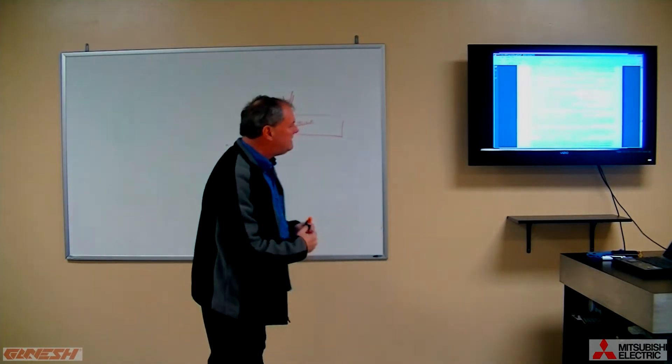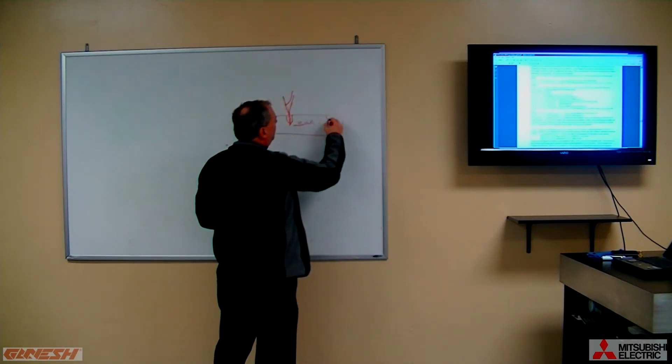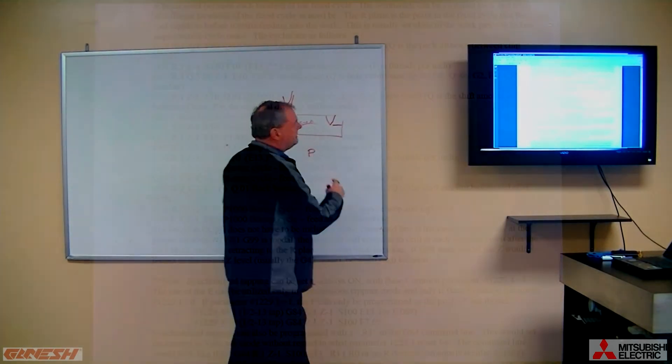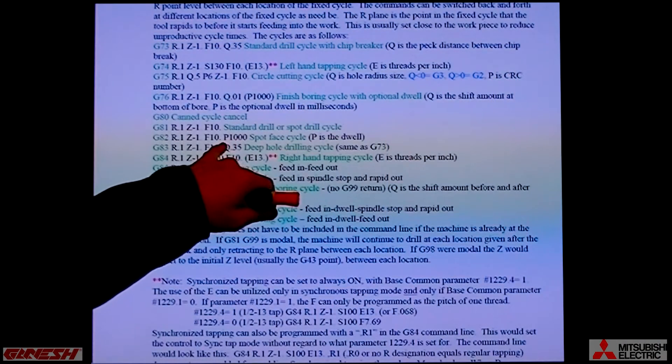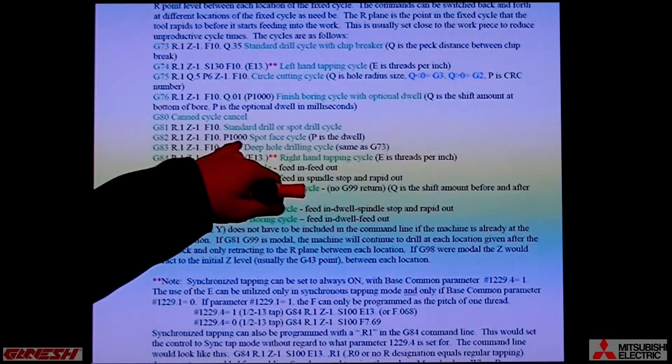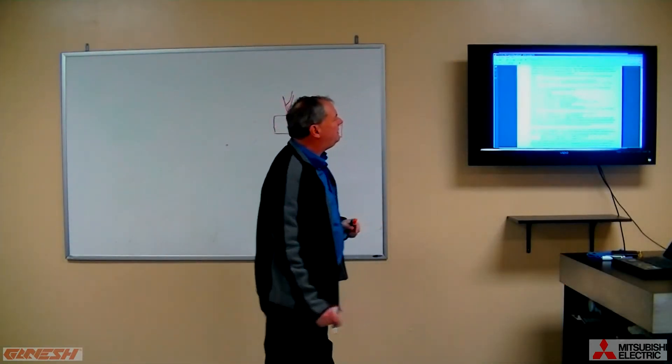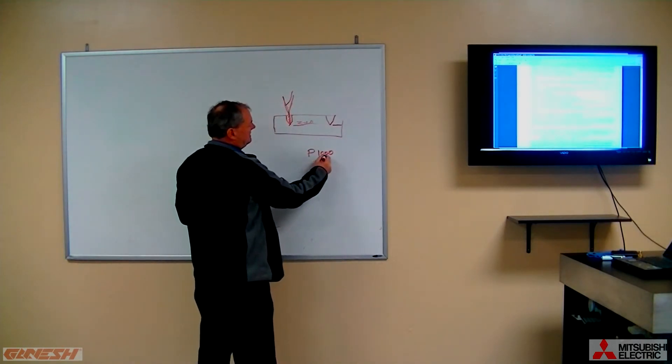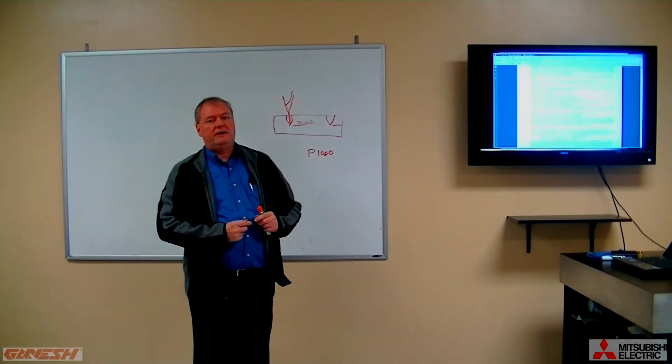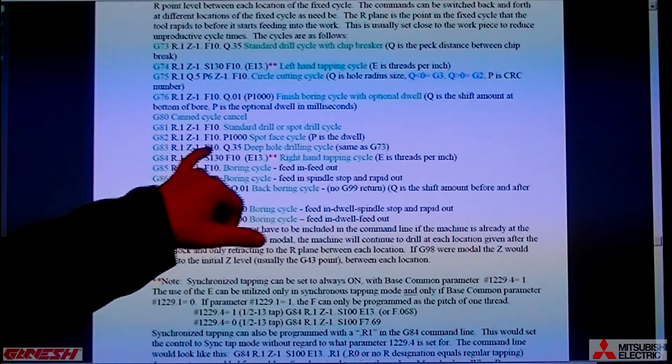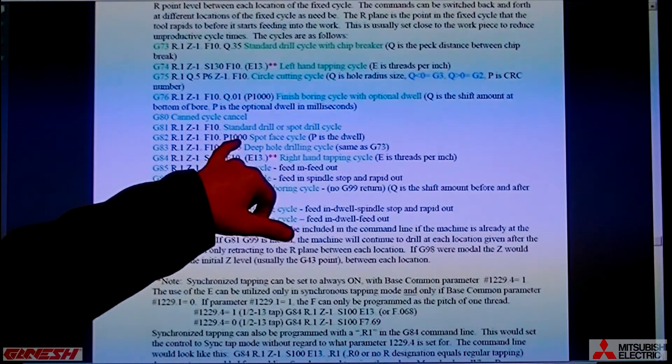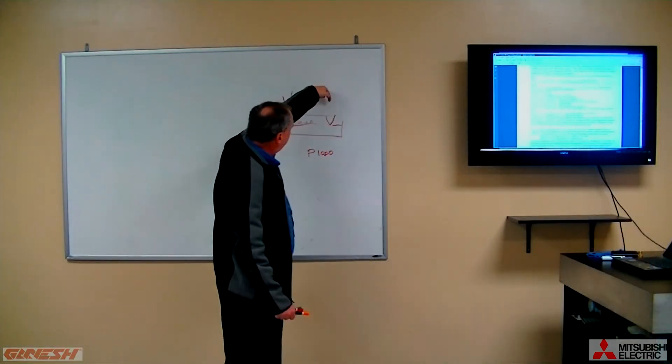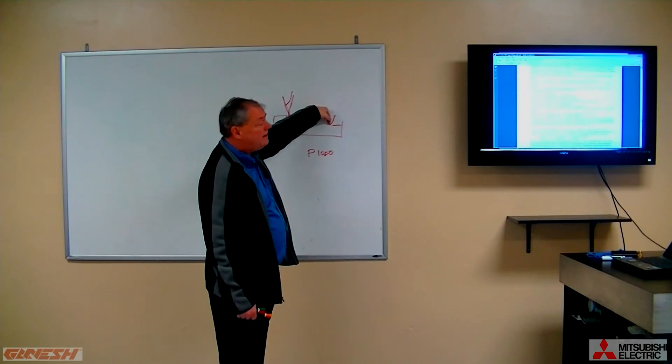G82 does exactly the same thing except that the G82 will feed down to its final depth. In this case, in my example here, Z minus 1, and you'll notice that the G82 has a value here of P, and P is a number of seconds that we're going to dwell. In that sample, it goes P1000. What that means is that it's a 10 second dwell. They don't have the decimal point in this example. Some machines are configured to ignore a decimal point for these P values, some of these arguments, but that's a 10 second dwell. So what the G82 does is it goes down to its final depth, sits there for 10 seconds, and then pulls out.